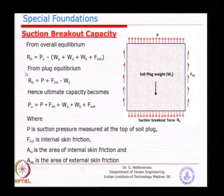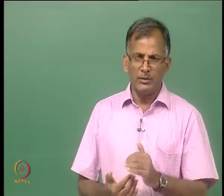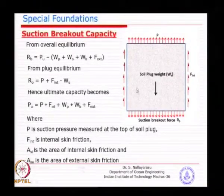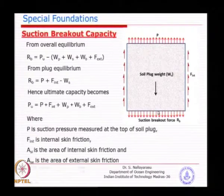Some research papers combine internal and external friction into an empirical breakout capacity — area times a breakout force with an empirical parameter, using bearing capacity factors similar to Nγ and Nq, varying with L/D ratio and water depth. These empirical charts are available but have been deliberately avoided here because the available data is very limited. Research on suction anchor capacities is still ongoing at many institutions.